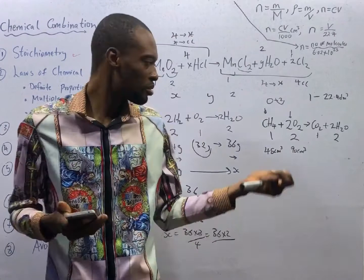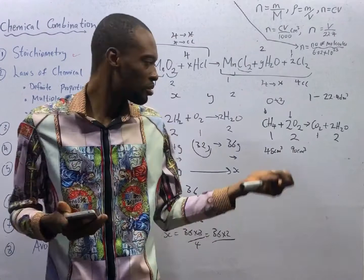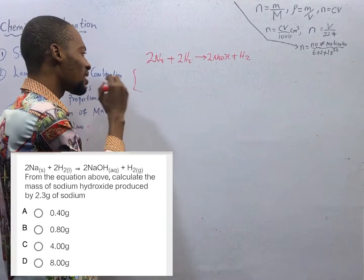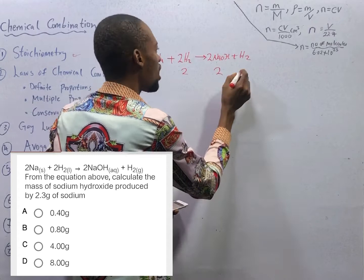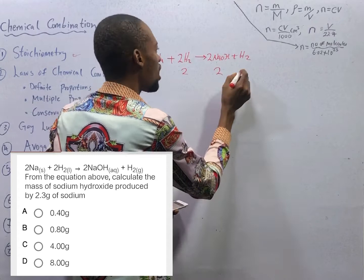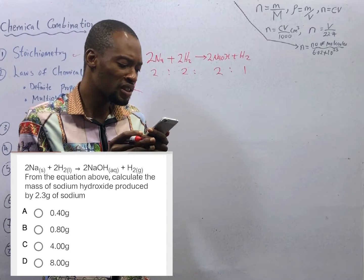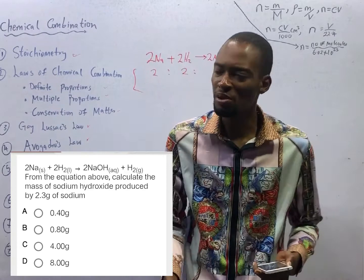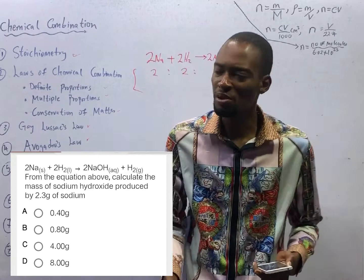This is the equation of reaction. This time around, they are not telling you to balance the equation — they have given you the equation. We need 2 moles of sodium to react with 2 moles of water to give us 2 moles of sodium hydroxide and 1 mole of hydrogen. So the ratio is 2:2:2:1. Calculate the mass of sodium hydroxide produced by 2.3 grams of sodium. When you see mass produced, what you do is compare the mass that should be to the mass that you are given. Our concern is the mass of sodium hydroxide produced by sodium.